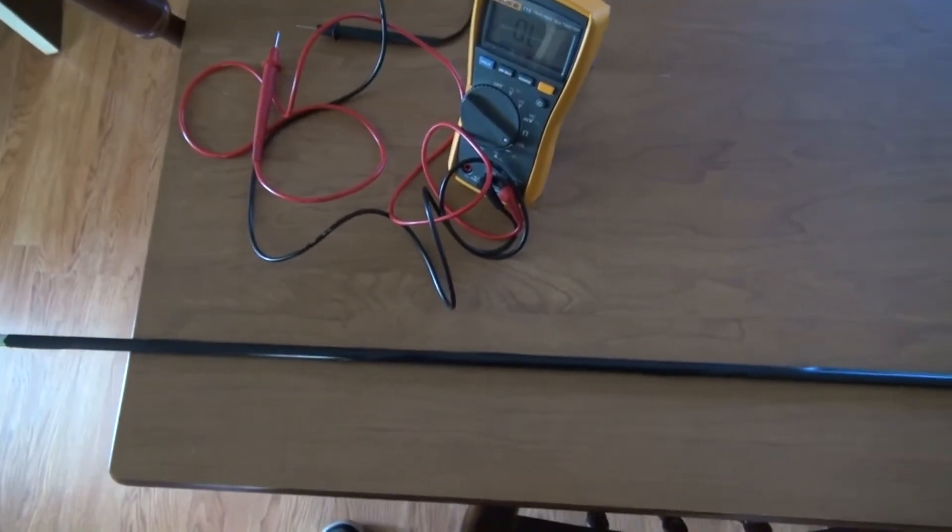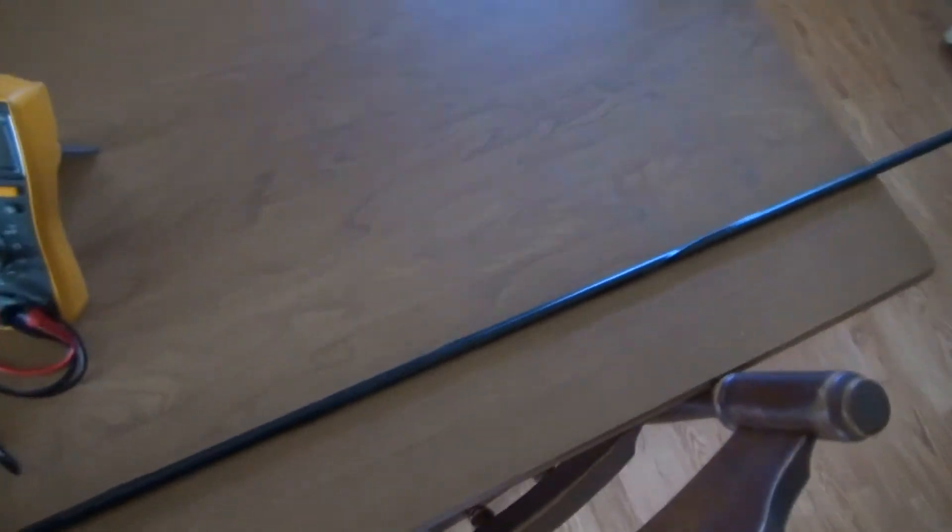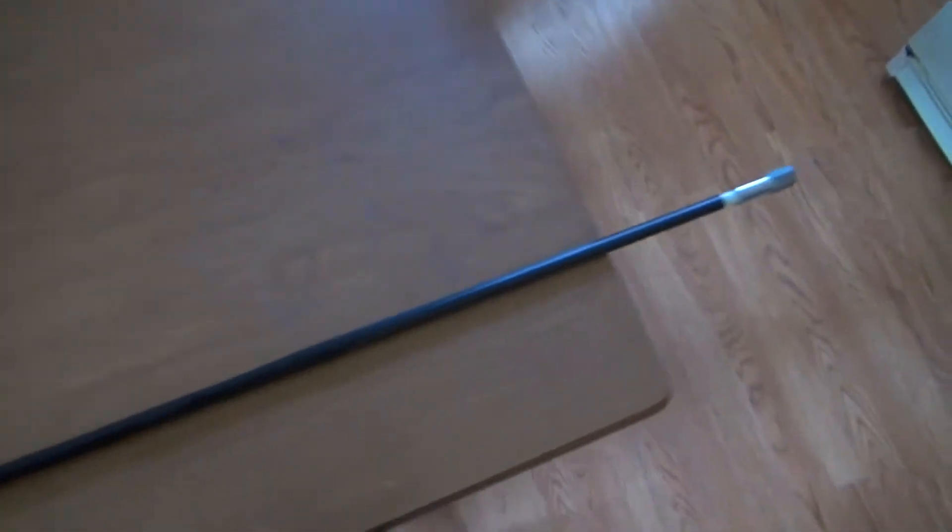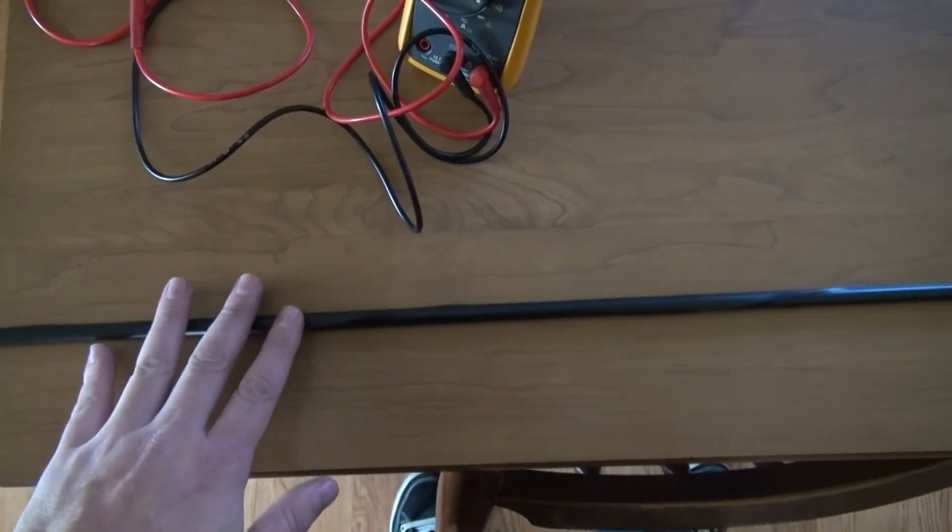All right, so today we're going to take a look at a 10 meter hamstick. This is a two-piece antenna that comes with the steel whip on top and the bottom sections are basically a loading section.